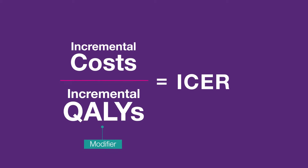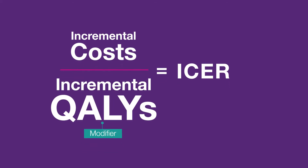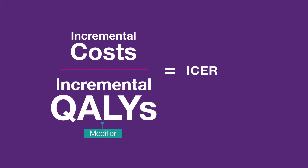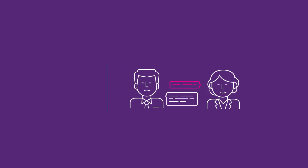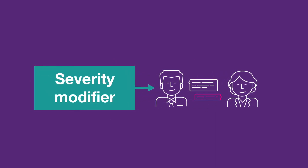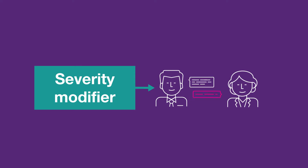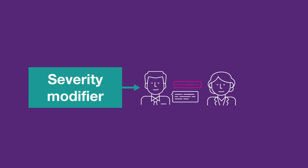A modifier increases the value of the QALYs provided by the medicine. It means NICE is prepared to pay more for a medicine if they judge it to be treating a severe disease. By applying a QALY weighting, it decreases the ICER, making the medicine more cost-effective. The proposal to introduce a severity modifier was supported in NICE's first consultation, reflecting views that the value of QALYs provided to patients with severe diseases should be more than those with less severe diseases.